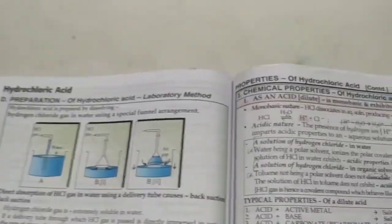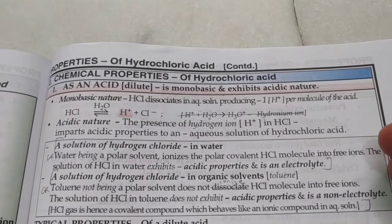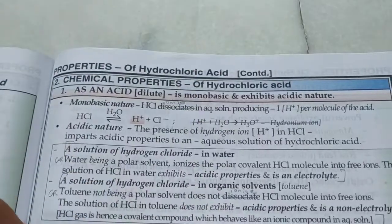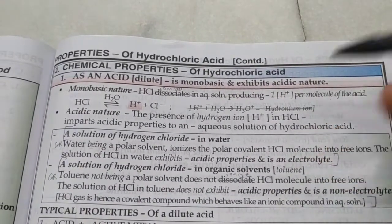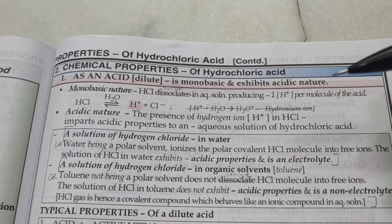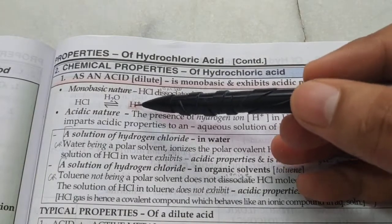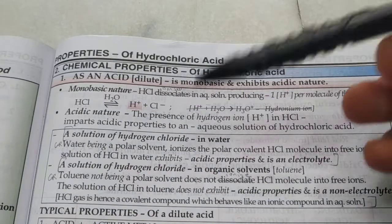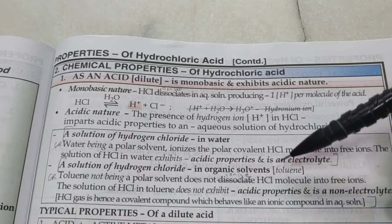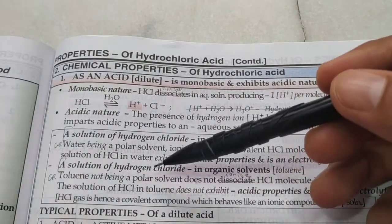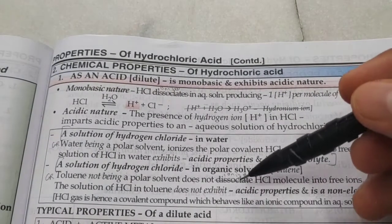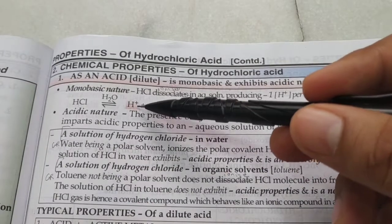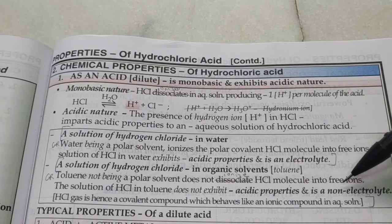For the chemical properties of hydrochloric acid: HCl ionizes in water — it does not dissociate, it ionizes — giving one H⁺ ion per molecule, making it a monobasic acid. It dissolves in water because it is a polar covalent compound and water is also polar. Water breaks the H–Cl bond to give H⁺ and Cl⁻ ions; H⁺ then attaches to water to form hydronium ions. However, HCl dissolved in toluene (a non-polar organic compound) will not ionize, showing no acidic properties and acting as a non-electrolyte.